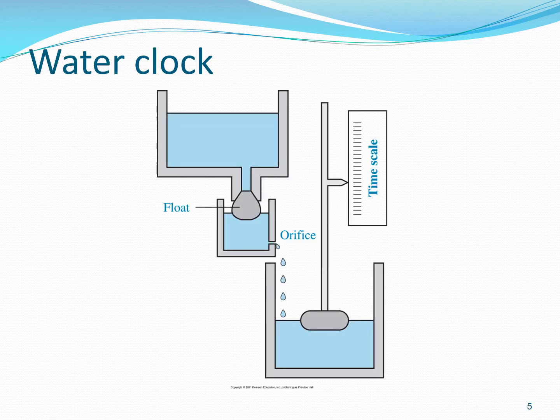An interesting application of liquid level control systems is a water clock, as depicted in the figure on this slide. If the level of the liquid in the middle tank is maintained constant, the outflow from the orifice will be constant, which will result in a constant rate of rise in the liquid level of the bottom tank, which can then be calibrated in terms of time. Water clock is one of the oldest examples of automatic control — water clocks existed even before 1600 BC.